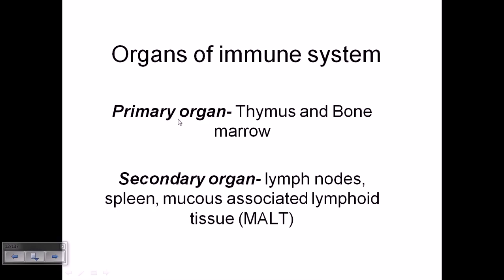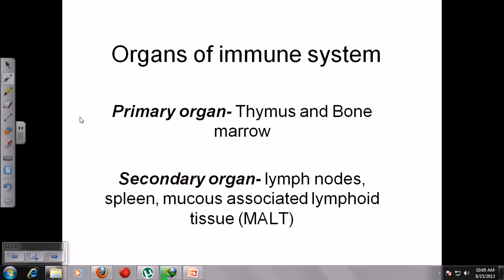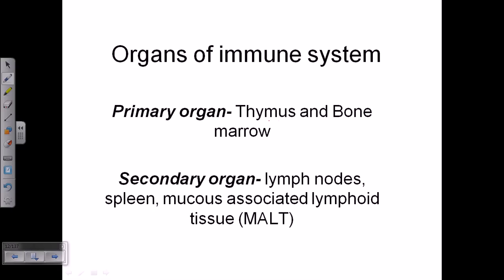If we look at the organs of the immune system, we can divide them into two parts: one is the primary organ system and another is the secondary organ. The primary organs are larger organs where most of our immune defense soldiers are produced. Those primary organs are the thymus and bone marrow — these two regions are the primary immune organs in our body.